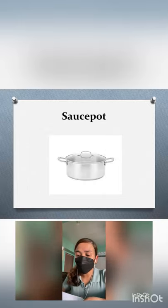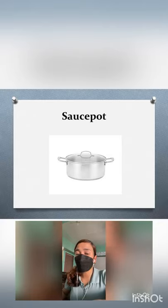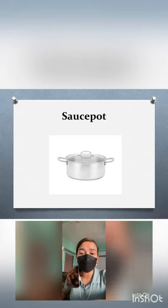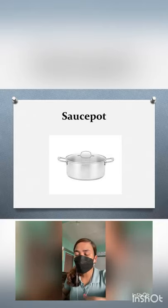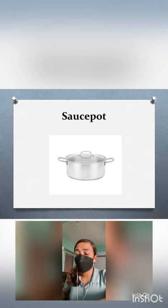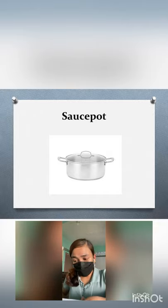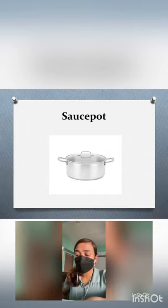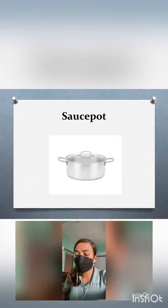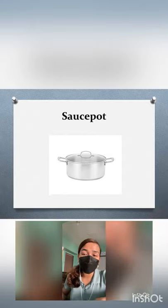Next, we have saucepots. Saucepots are used for simmering or boiling larger quantities of ingredients. They generally have two short sturdy handles so they can be lifted with two hands. Saucepots and saucepans are distinguished by volume, usually 1 to 8 liters. Though they may look like Dutch ovens, they do not have the same heating ability.